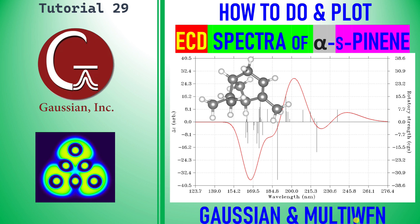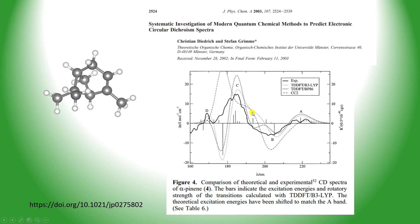Dear friends, this is tutorial 29. In this tutorial I am going to teach you how to calculate and plot ECD spectra of alpha-pinene using Gaussian and Multiwfn software. This is the calculated ECD spectra of alpha-pinene. This is the paper from the Journal of Physical Chemistry A — they published the ECD spectra of alpha-pinene using different theoretical models and compared with the experimental one. We used only the B3LYP model, and my result is absolutely matching with their ECD spectra.